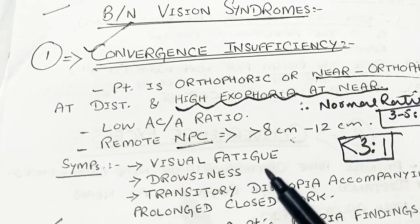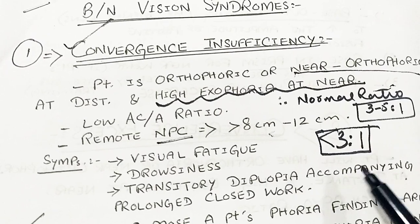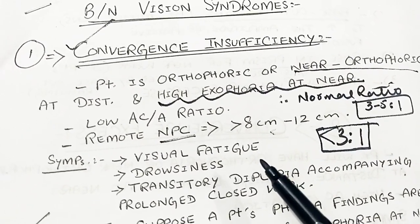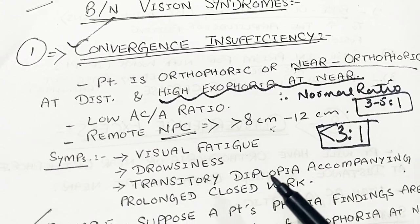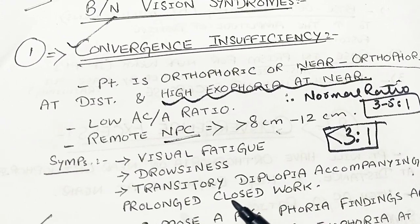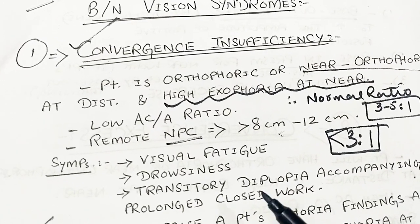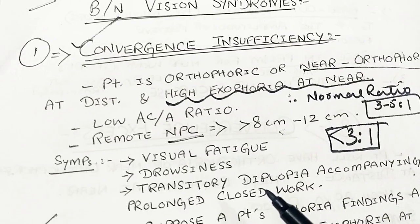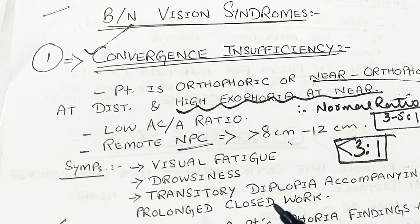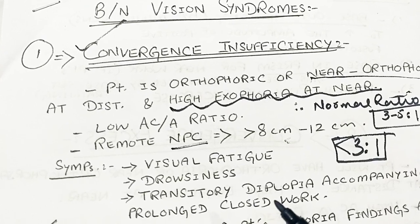Symptoms the patient experiences include visual fatigue, drowsiness, and transitory diplopia accompanying prolonged close work. The patient has asthenopic symptoms and especially diplopic symptoms — double vision — particularly when doing near work or computer work. The patient also complains of constant headache especially while working at near.